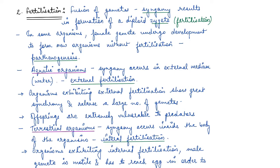So basically, there is a male and a female gamete — both are haploid — and these two together fuse and form a zygote. This zygote is diploid in number and has two sets of chromosomes.